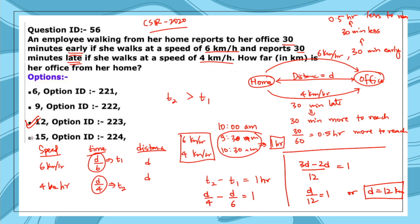The logic to solve this question was to first find time in terms of distance, then find the difference of times, and finally substitute to get the distance. Using this same formula approach, we solved it. Let's take another question.